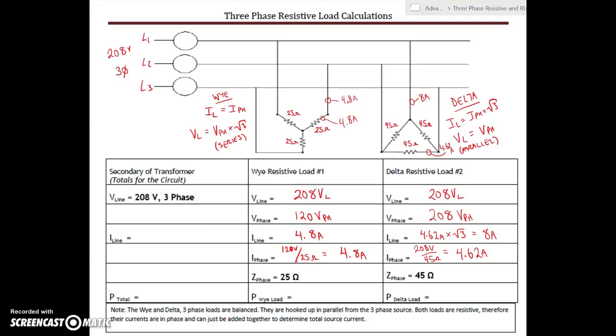Down here for the power, we can find our power by taking our line voltage—so we've got 208 volts—times our line current of 4.8 amps times root 3, and that gives us 1729.27 watts.